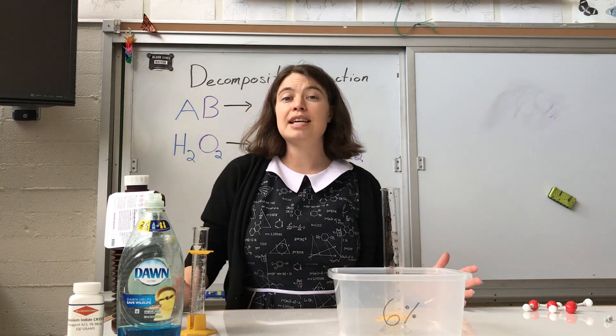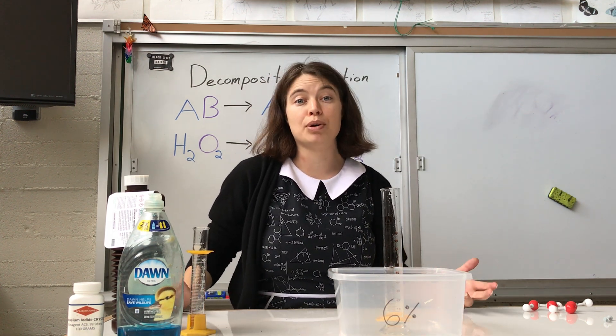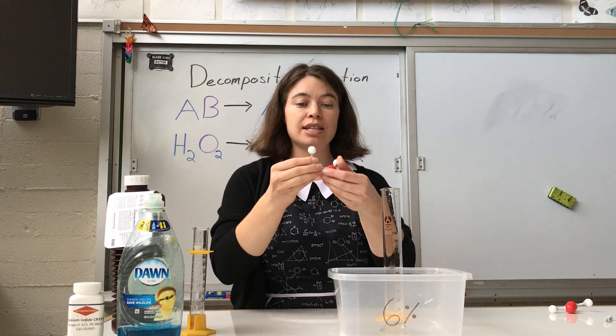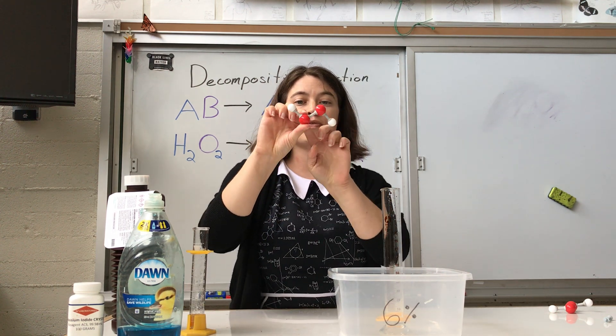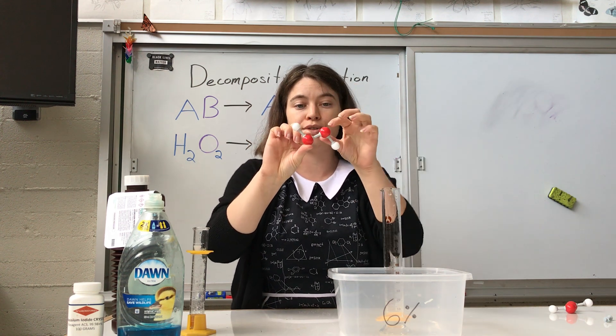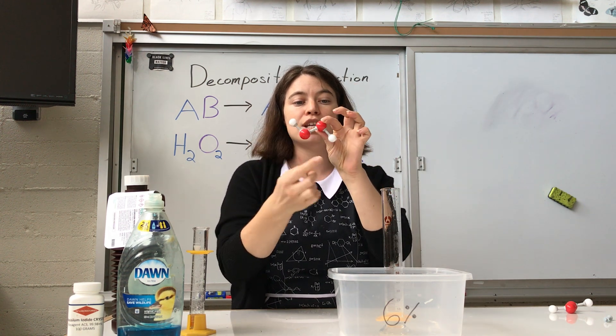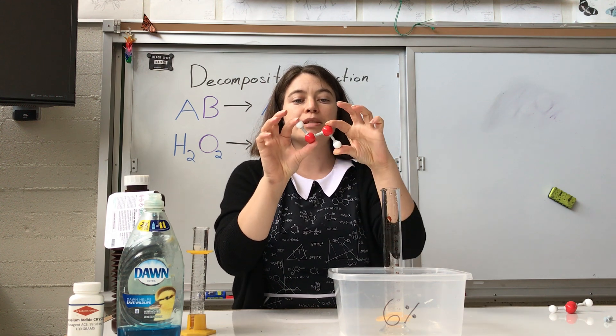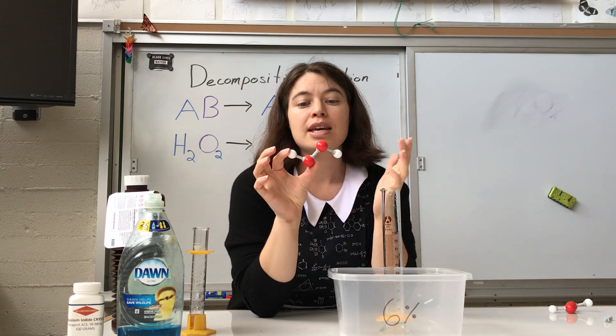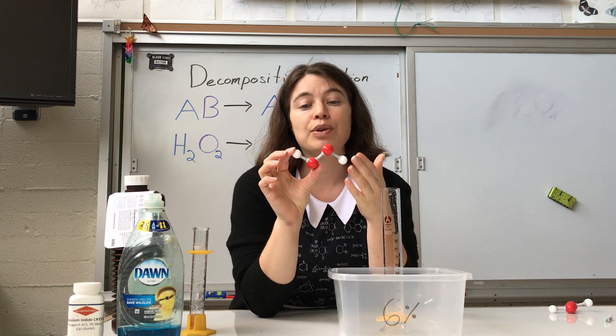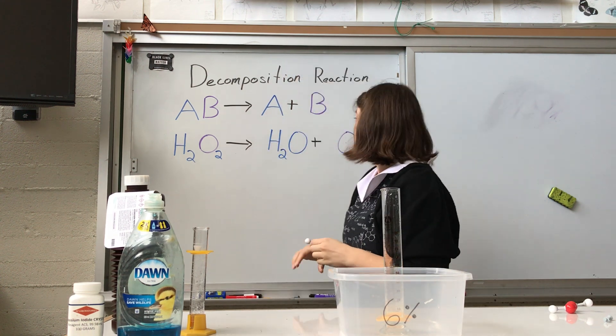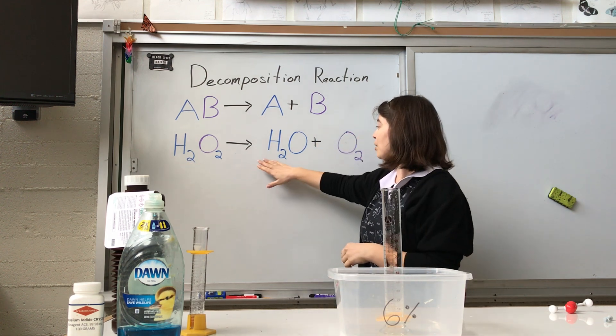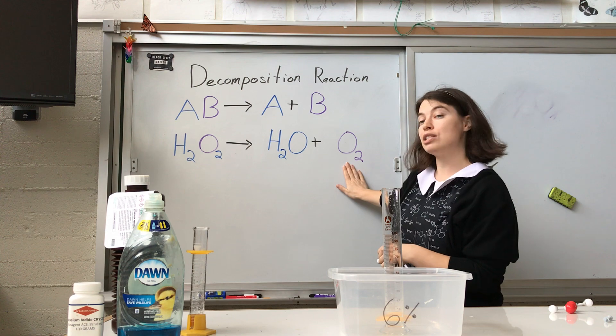Now today we're going to be doing the decomposition of hydrogen peroxide. So hydrogen peroxide is a little molecule that looks like this. So the red spheres are oxygens, the white spheres are hydrogens. So you can see this is H2O2, and this molecule breaks down into two things. It will break down into water and oxygen gas. So this H2O2, hydrogen peroxide, breaks down into water and oxygen gas.